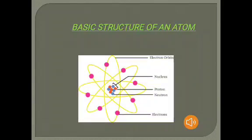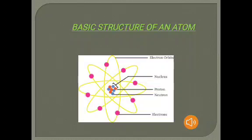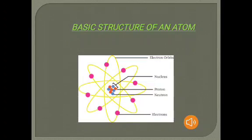We will learn the definition of an atom and also the basic structure of an atom. So what is an atom? Basically, it is the basic unit of matter and also the smallest particle of an element which is not capable of independent existence. An element is made up of only one kind of atoms, and the properties of an element depend upon the atoms constituting it.